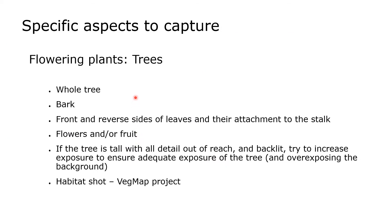In the case of trees, what you want to capture is the whole tree, the bark, the front and reverse sides of leaves and their attachment to the stalk, and the flowers and/or fruit. If the tree is tall with detail out of reach and backlit, try to increase the exposure to ensure adequate exposure of the tree, and overexpose the background if necessary. Think about a habitat shot as well, as that allows you to include the observation in the VegeMAP project.